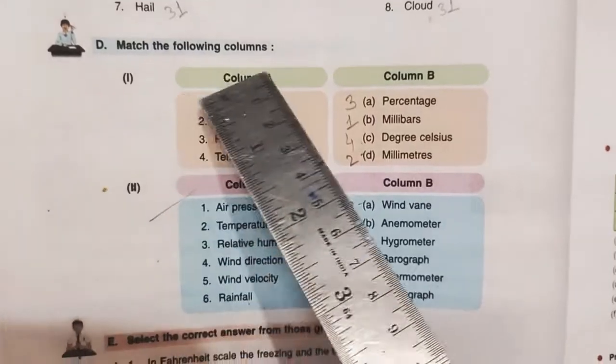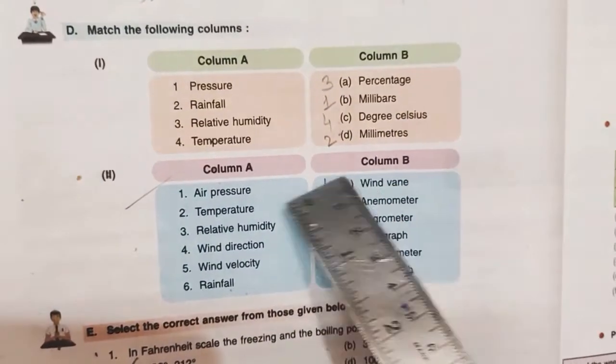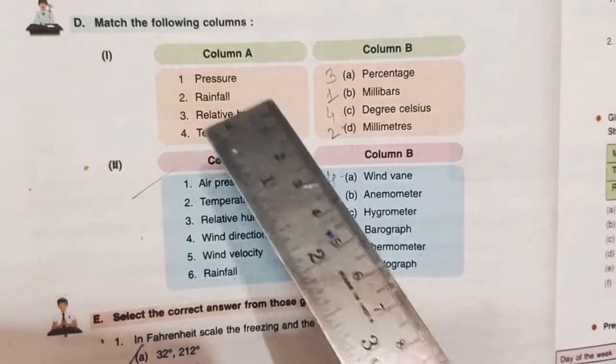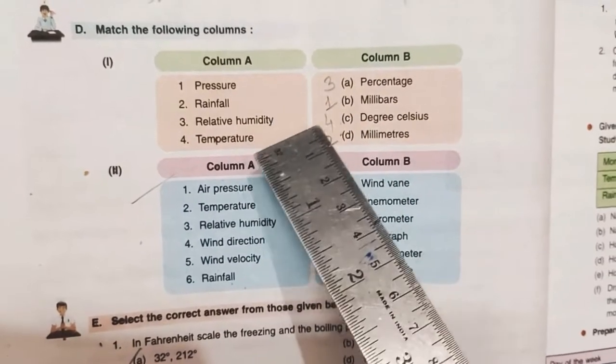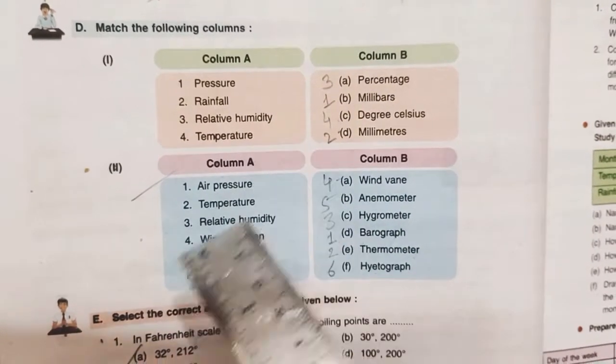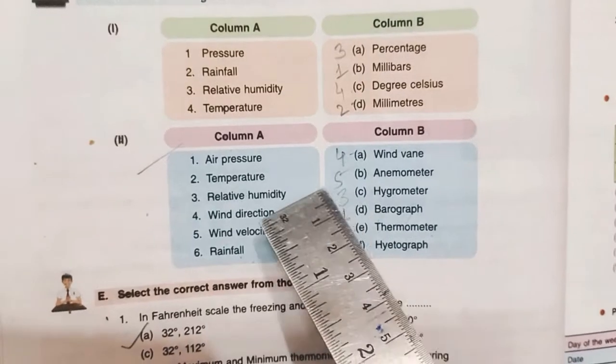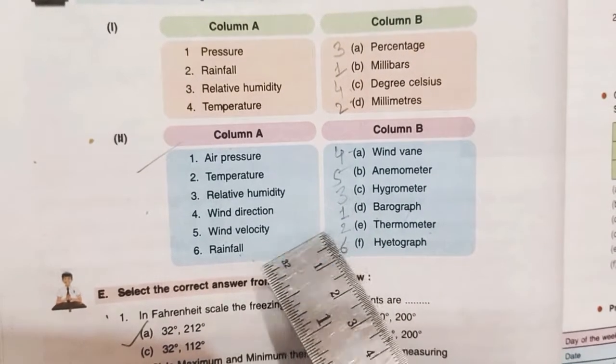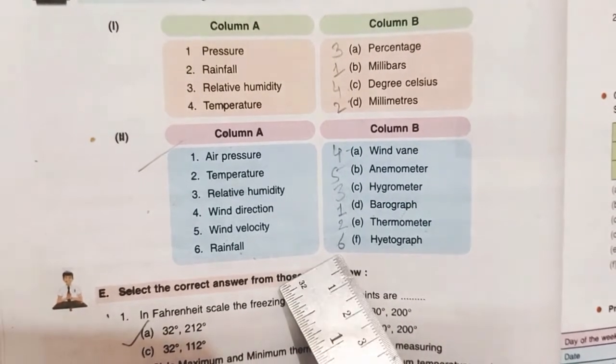D, match the following columns. You see the words and match. These are the numbers: 3, 1, 4, 2. And second number: 4, 5, 3, 1, 2, 6.